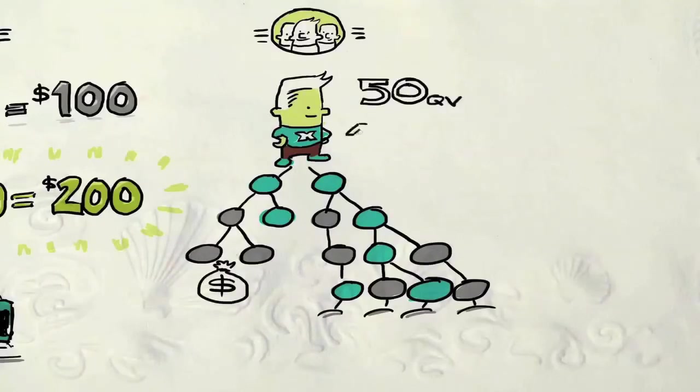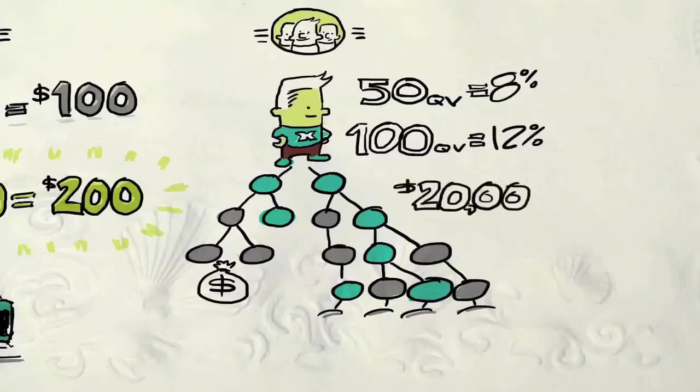Once again, you choose how much you want to earn from your pay leg. 8% if you're active with only 50 QV or 12% if you're active with 100 QV. The team bonus alone here can pay you up to $20,000 a week.